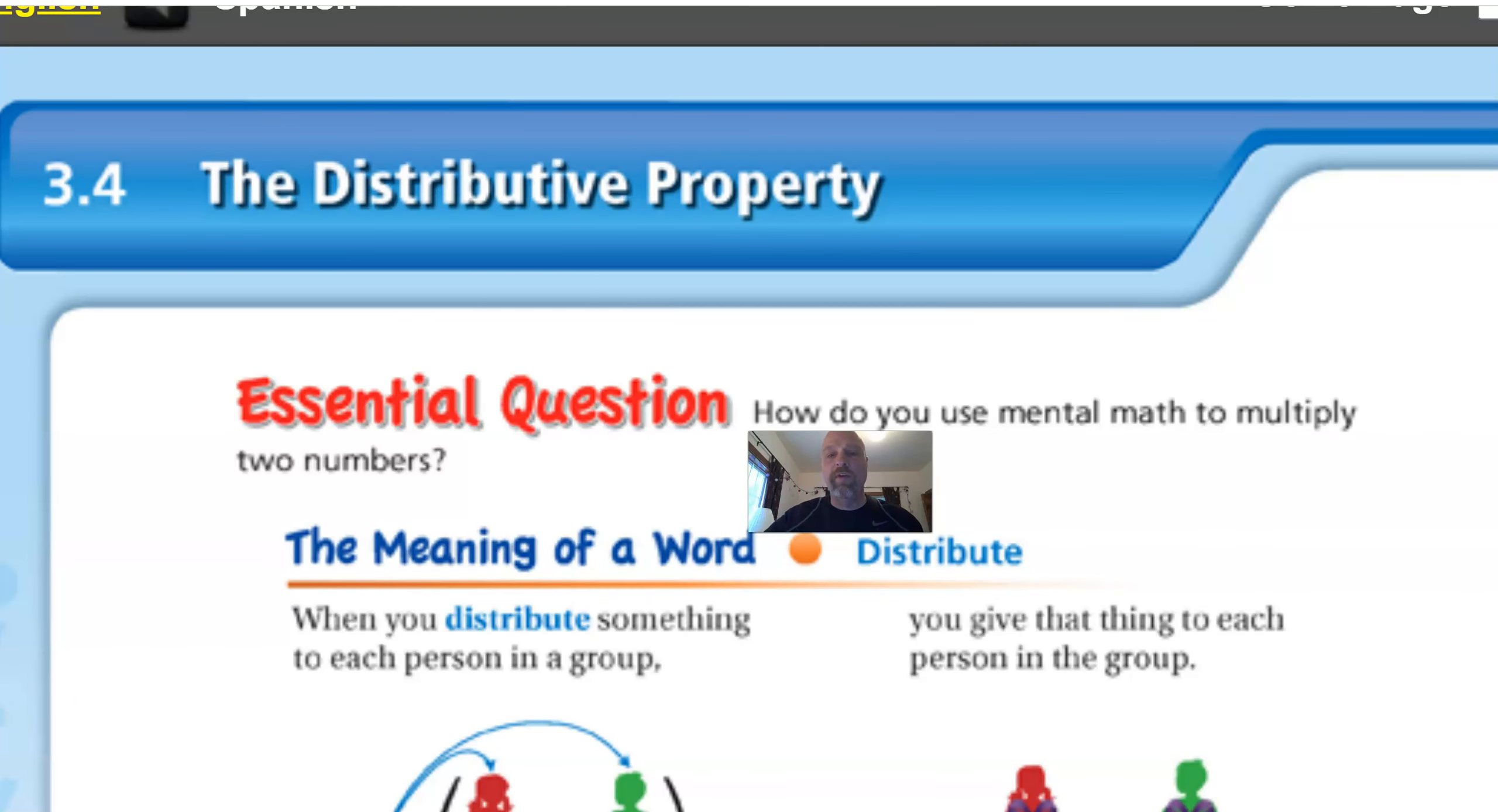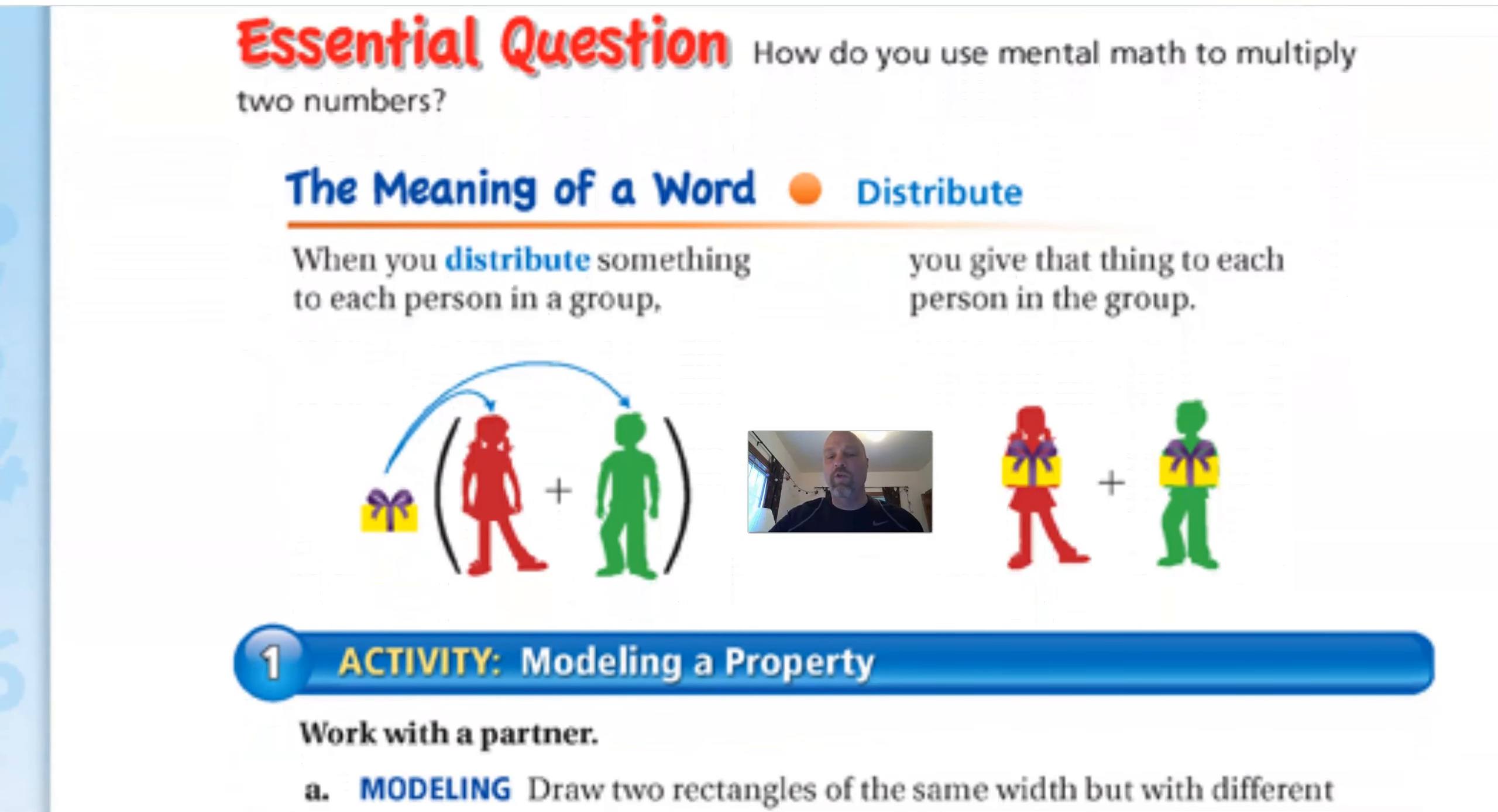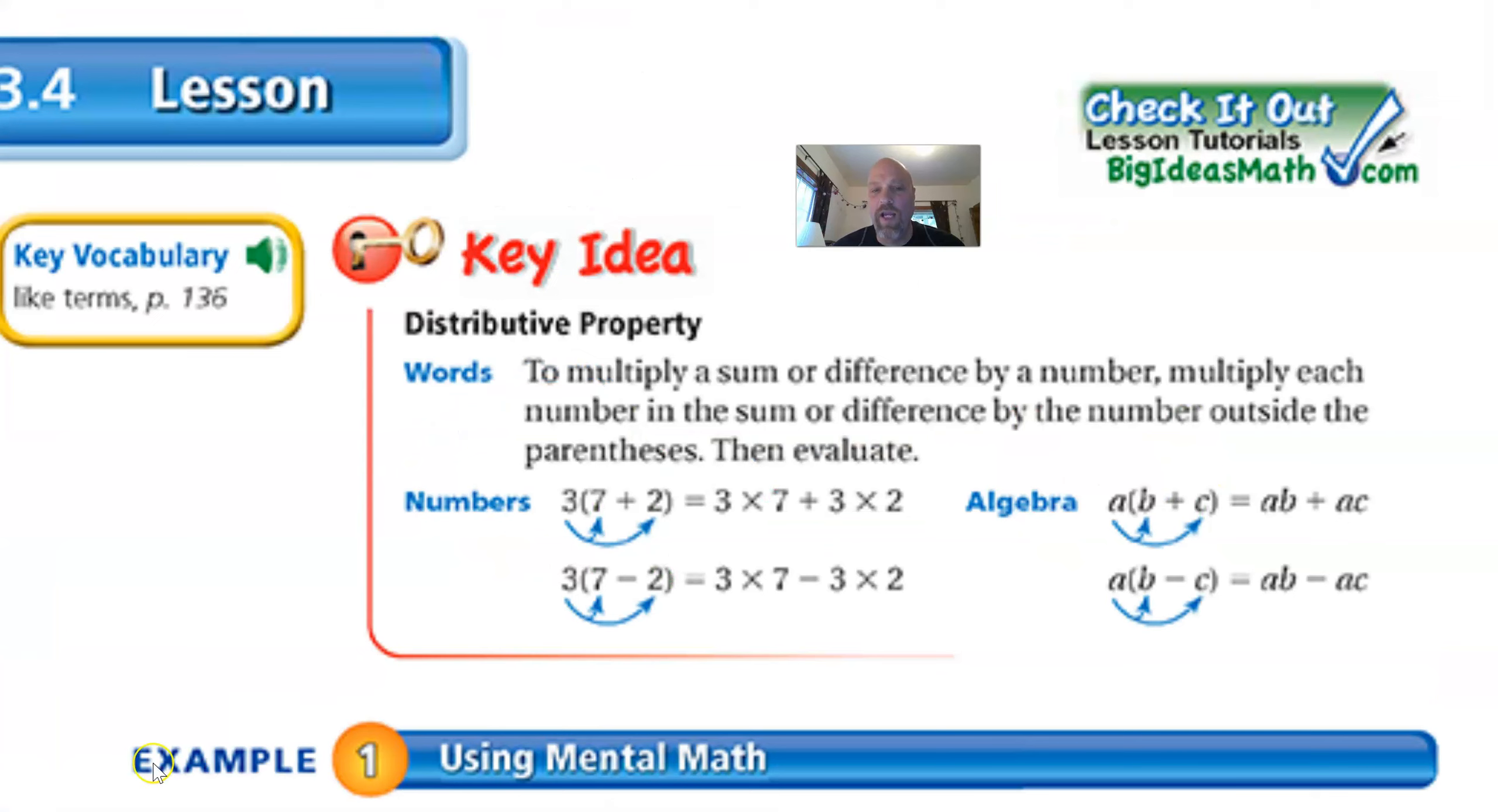Our book does a pretty good job of explaining how this works, and here's a good picture. So when I look at these guys, one thing we need to look at is this makes sense. When you see 3 times (7 + 2), I can do this. You're right, please excuse my dear Aunt Sally. I can say, well, 7 plus 2 is 9, and 3 times 9 is 27, or I can go 3 times 7 plus 3 times 2.